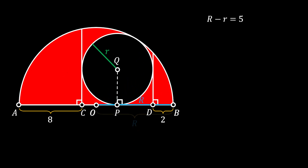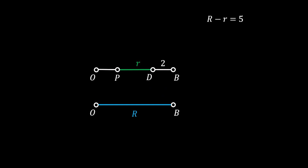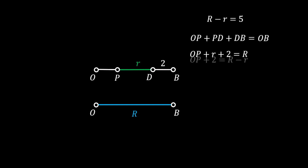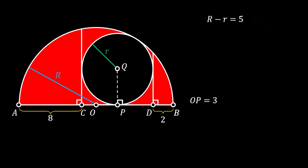Rotating the radius of our half circle gives OB = R. Rotating the radius of the smaller circle and translating some lines, we see that OP + PD + DB = OB. Substituting values: OP + r + 2 = R. Rearranging: OP + 2 = R − r. Since we know R − r = 5, we get OP + 2 = 5, so OP = 3.